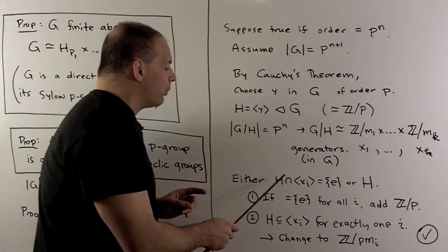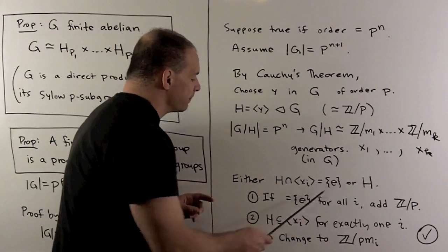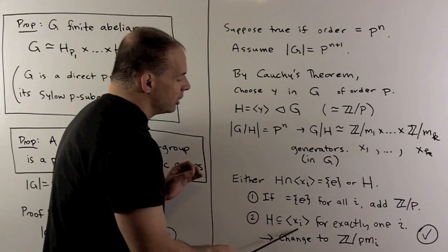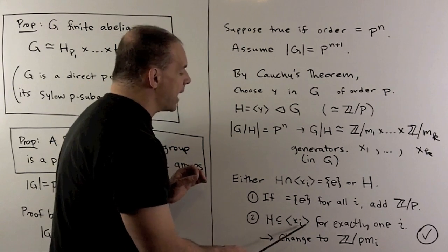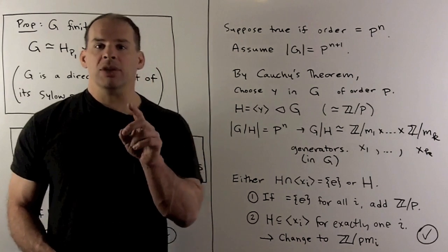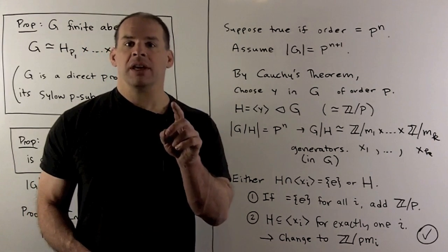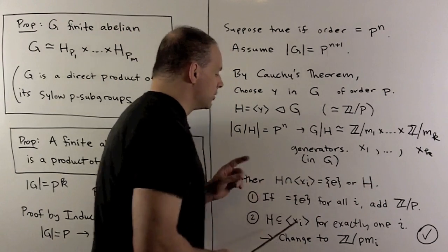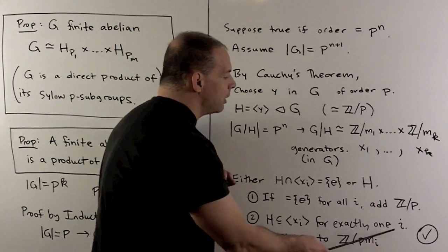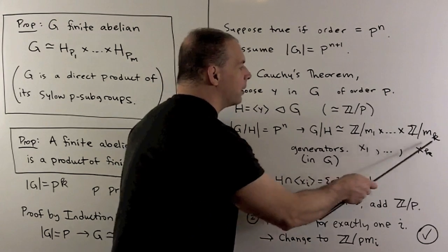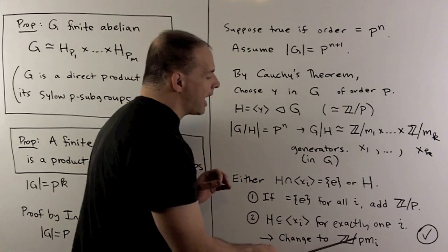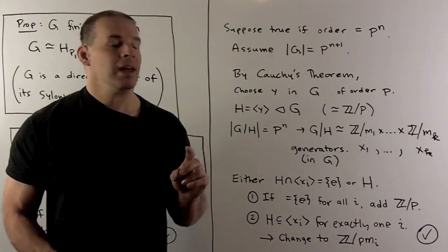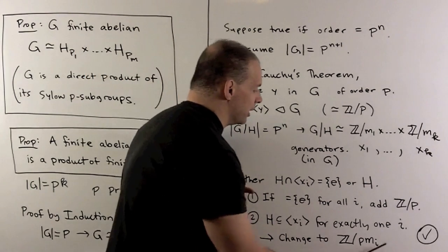Otherwise, in the other case, H is going to be entirely contained in one of these groups generated by an x sub i. If we count elements, we note that if H is in one of these cyclic subgroups, it can't be in any others — so it would have to be in exactly one. The effect on the direct product is going to be to change some Z mod Mᵢ to Z mod p·Mᵢ. Again, we see that we have a result in this case.